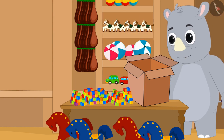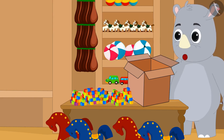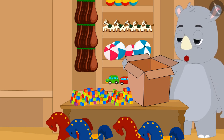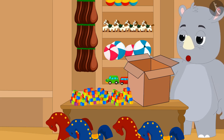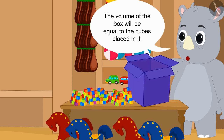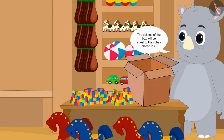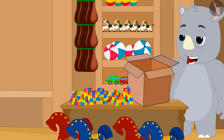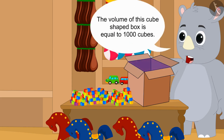The total space occupied by any object is its volume. The volume of the box will be equal to the cubes placed in it. This means that the volume of this cube-shaped box is equal to 1000 cubes.